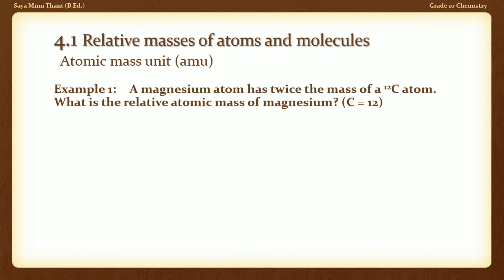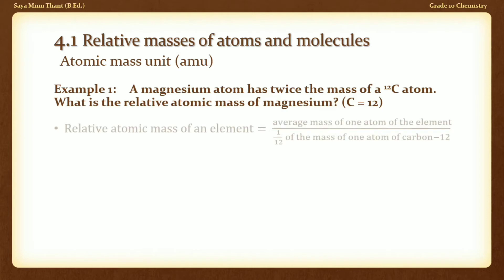The relative atomic mass of an element is equal to the average mass of one atom of an element divided by one-twelfth of the mass of one atom of carbon-12.